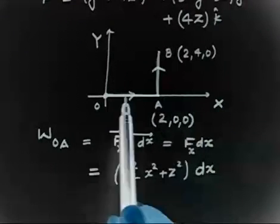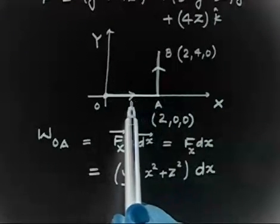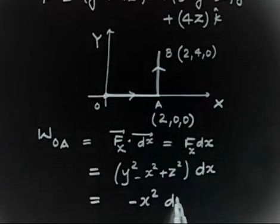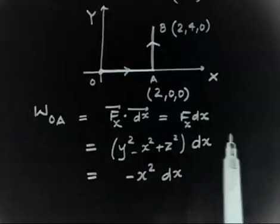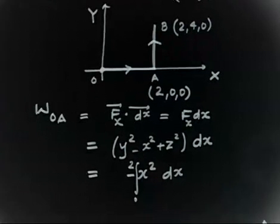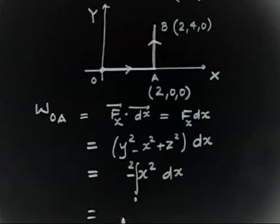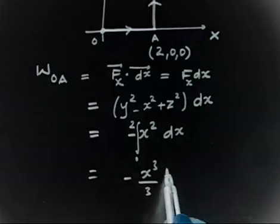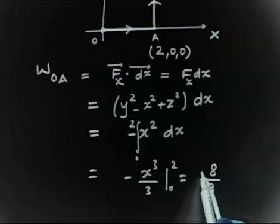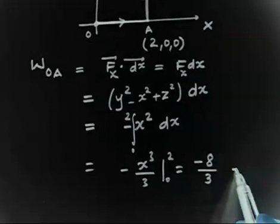Going from O to A along the x-axis, y is constant at 0 and z is also constant at 0. So it simply becomes ∫(-x²)dx, integrated from 0 to 2. This gives -x³/3 evaluated from 0 to 2, which equals -8/3. So this is the work done along path OA.